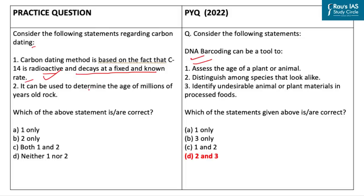The second statement says it can be used to determine the age of millions-of-years-old rock. This statement is not correct, because carbon dating cannot be applied under all circumstances — particularly it cannot be used to determine the age of rocks or non-living things. Secondly, carbon dating is not successful in calculating the age of things more than 40,000–50,000 years old, because after 8 to 10 cycles of half-lives the amount of C-14 becomes almost negligible and cannot be detected. The correct answer is option A — only statement 1 is correct.